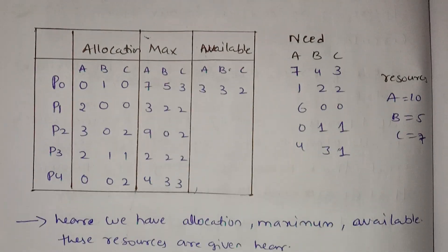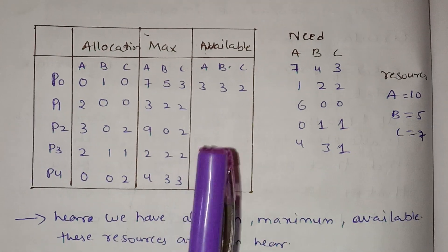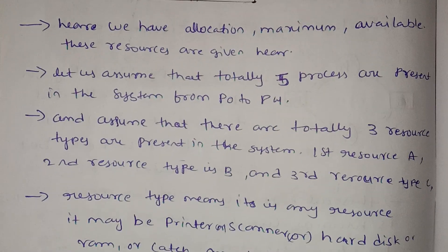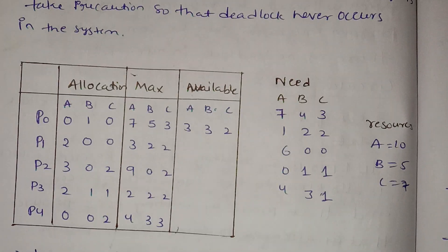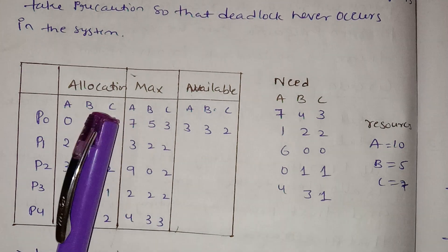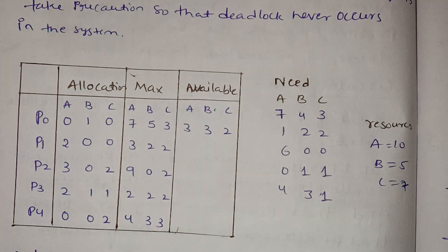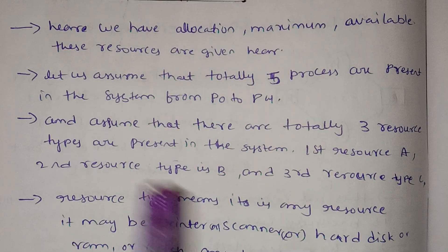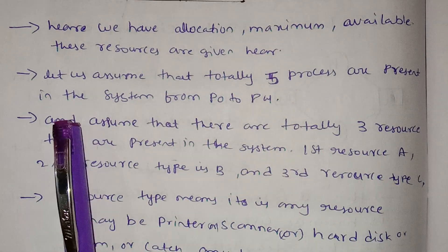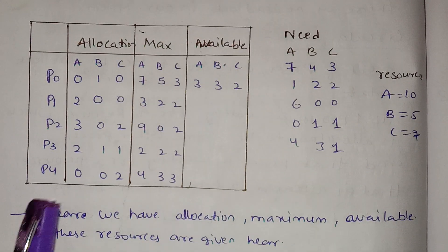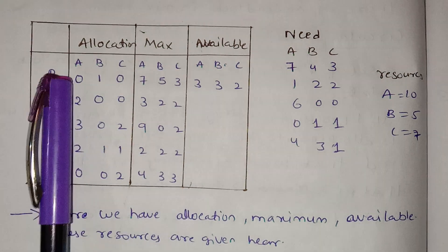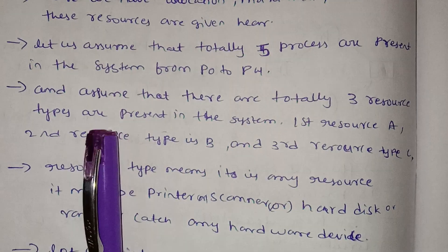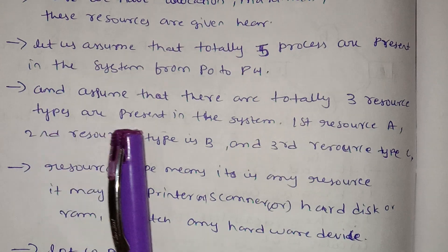Next, this is the Banker's Algorithm table. Here we have allocated resources and maximum available resources. Let us assume that totally 5 processes are present in the system — P0 to P4 — so there are 5 processes total.